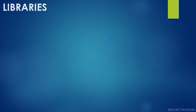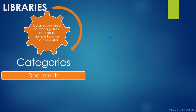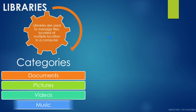Next, we are moving on to libraries. Libraries are used to manage files located at multiple locations in a computer. Just like a normal folder, we can access any kind of files in the library. The default categories of libraries are documents, pictures, videos, and music. If you want to add anything extra, you can add it by yourself, but these four are the default categories.